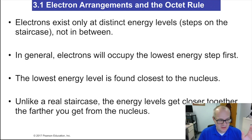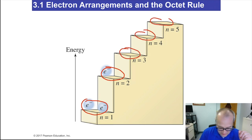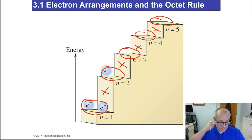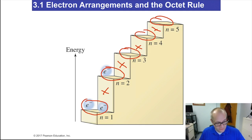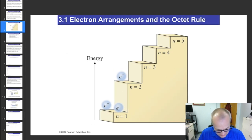Electrons can exist on specific steps of a staircase — here, here, or here — but they cannot be in between, ever. Imagine walking up a staircase: you can exist on step one or step two, but you can't levitate between stairs. Electrons do the same thing — they can be in the first energy level or the second energy level, but never between them. They can be in the third or fourth, but never between. We have to be very clear about that.